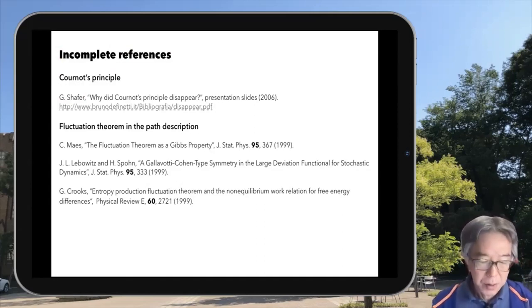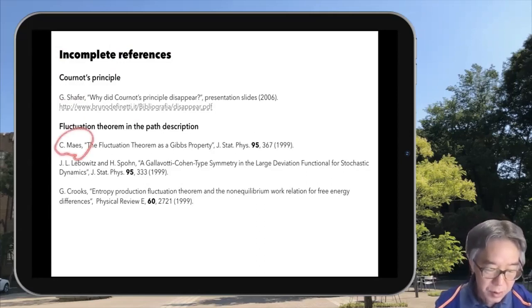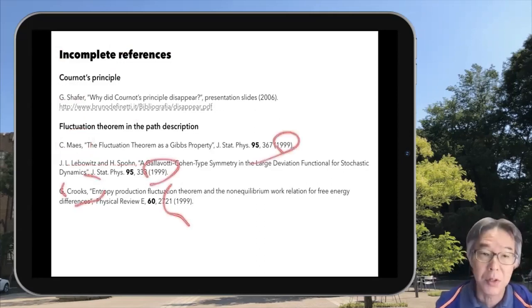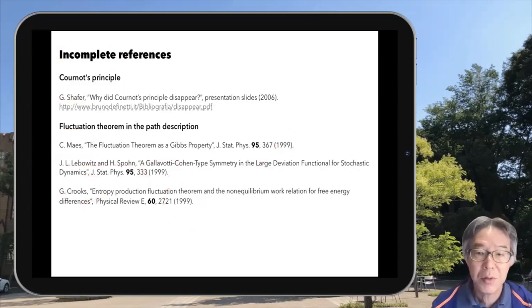And in the final section of this part, we discussed the fluctuation theorem for stochastic processes based on the viewpoint of a path space description. And such techniques as well as viewpoints were developed by Christian Maes, Joel Lebowitz, Herbert Spohn, and Gavin Crooks almost at the same time in 1999.